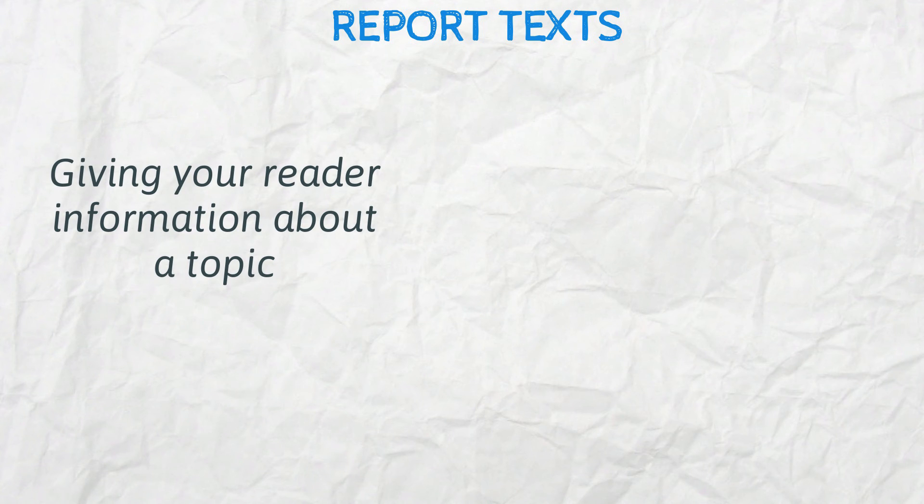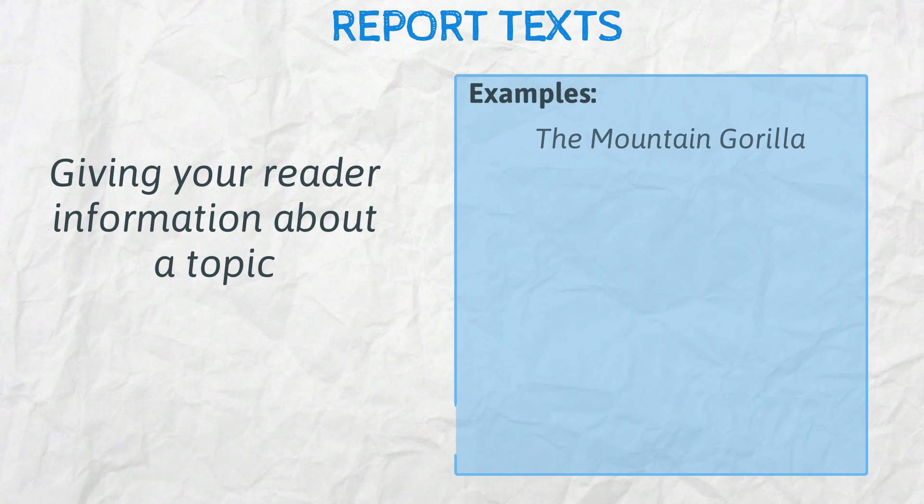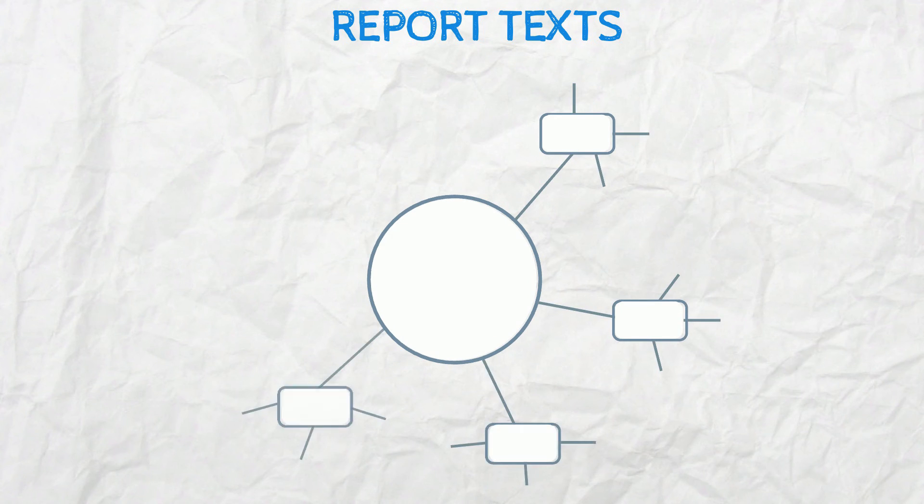Report texts. Reports give your reader information about a topic. For example, you might be writing about the mountain gorilla, or basketball, the moon, the Olympics, or even a country such as Italy. When conducting your research for a report, it's a good idea to arrange it on a mind map, also known as a spider diagram. Each arm of the mind map will be about a separate subtopic and should answer a question that you're trying to answer.